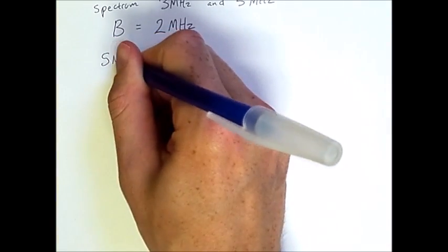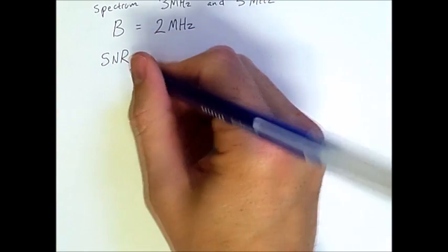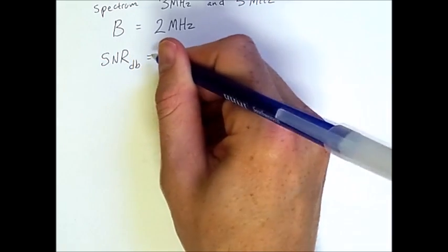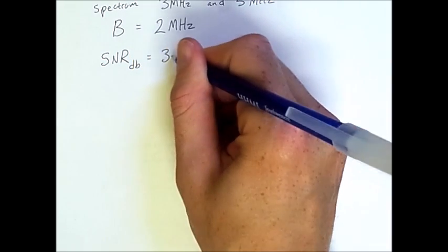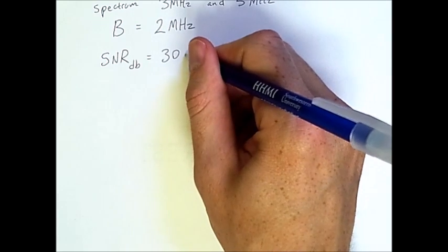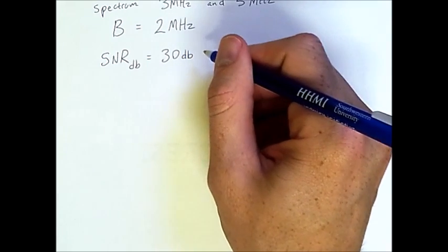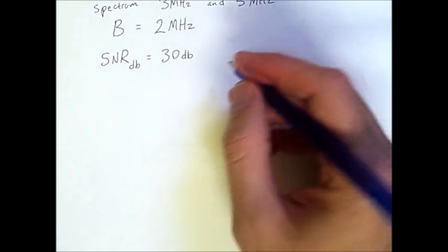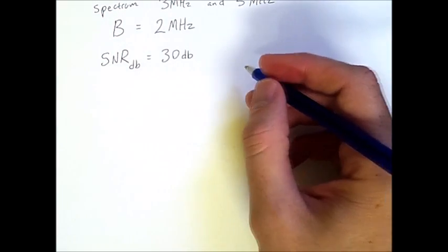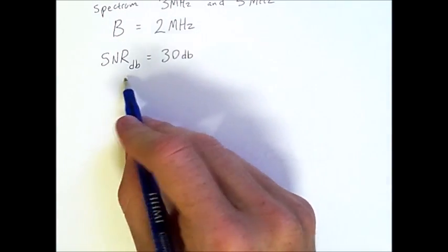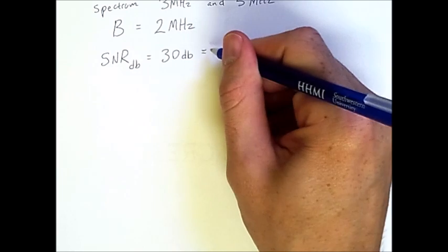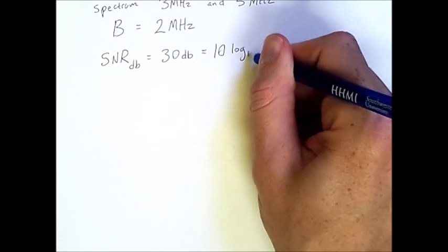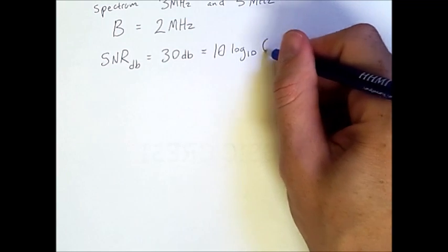Now, we're also going to assume that we know the SNR in decibels, once again, because this is something that can be measured. So, SNR sub dB equals 30 decibels. So, once again, this is a fairly large value, but it'll work for our computations. Now, using the formula we saw previously, we know that SNR dB is equal to 10 times log base 10 of SNR.